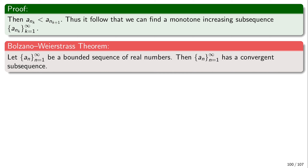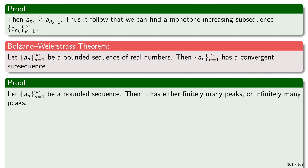We have already proved that every monotone and bounded sequence must be convergent, for which we heavily exploited the axiom of completeness — a super important property of the real numbers. Then the other step was analyzing peaks: if we have infinitely many peaks we can find a monotonically decreasing subsequence, and if finitely many peaks we can find a monotonically increasing subsequence. That is basically the entire proof. Let a_n be a bounded sequence.